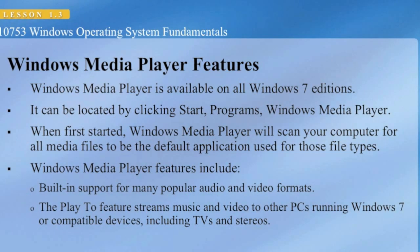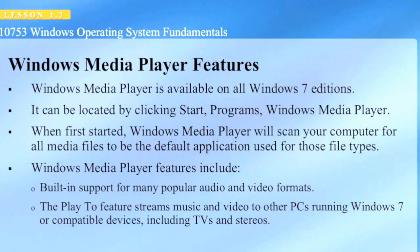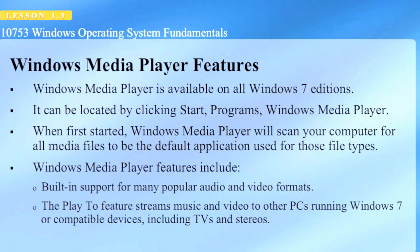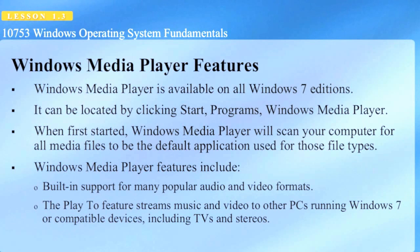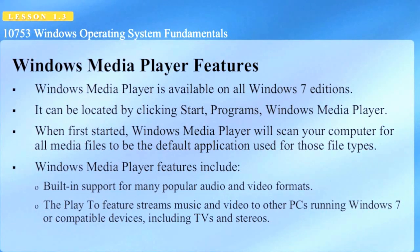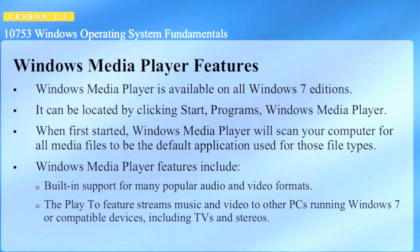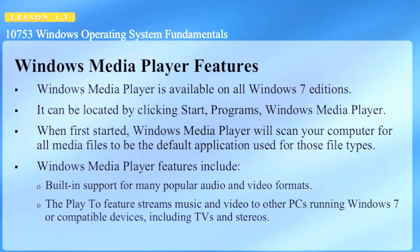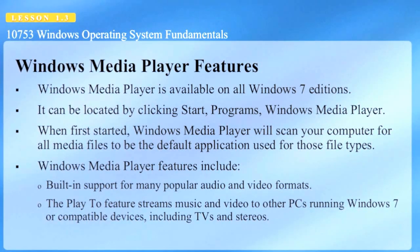One of the applications included in Windows 7 is Windows Media Player. It's available in all Windows 7 editions and is located by clicking Start, Programs, Windows Media Player. When first started, Windows Media Player will scan your computer for all media files to be the default application used for those file types.